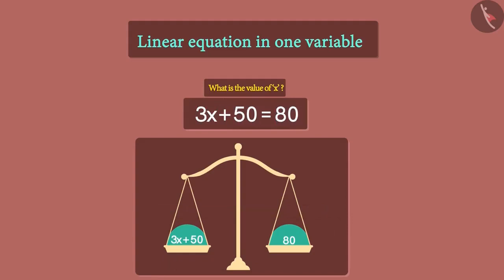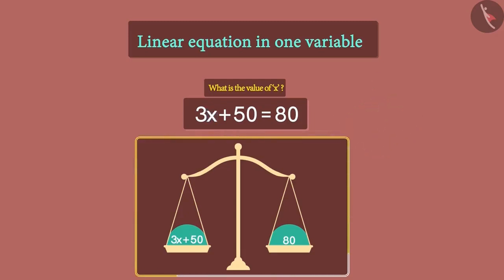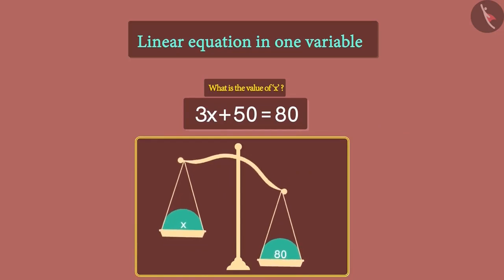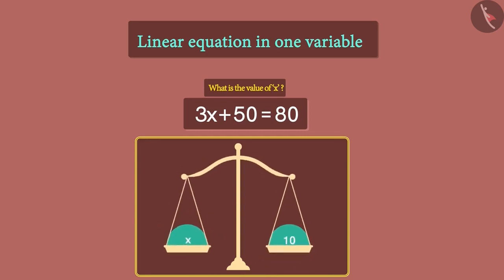Think of numbers as weights. So our task is to find the value of x such that the balance of the equation is not disturbed. The procedure is to write only x in place of all these digits on the left-hand side. And doing so, we have to remove something from the right-hand side in order to maintain the balance. If we succeed, then the value of x will be the number on the right-hand side.